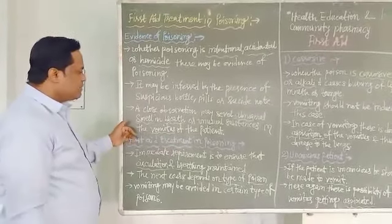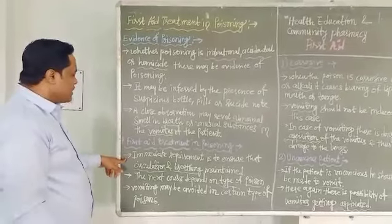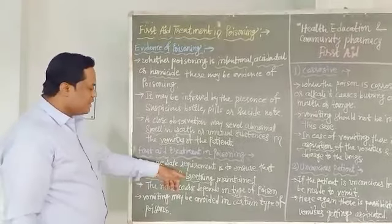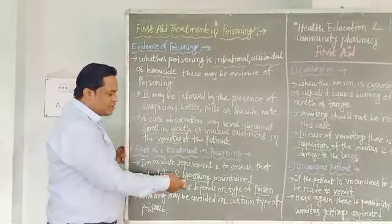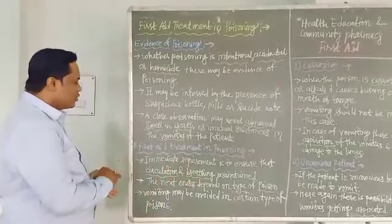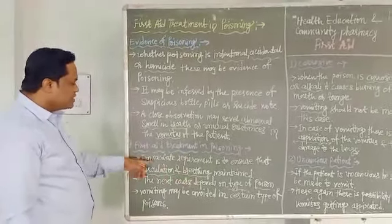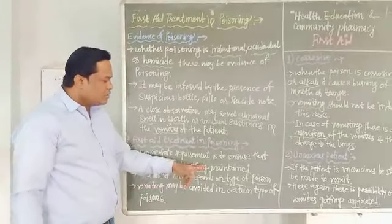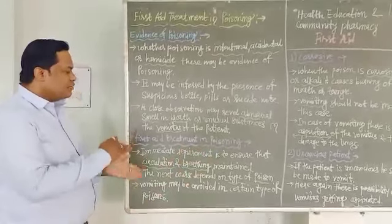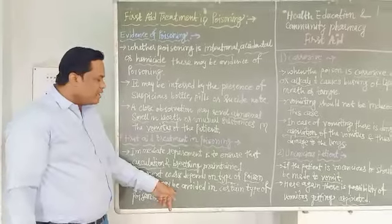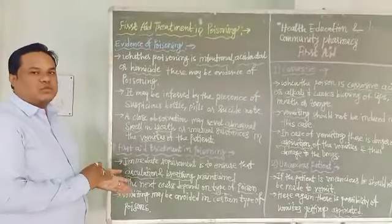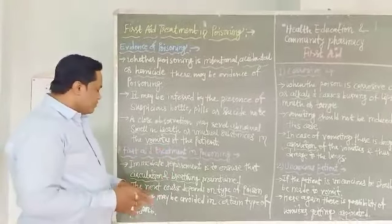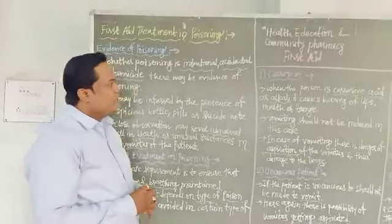The first immediate requirement in poisoning is to ensure that circulation and breathing is maintained. First check the circulation, second is the breathing, and maintain both in this condition. The next course of action depends on the type of poison — identify the poison. Vomiting may be avoided in certain types of poisons because aspiration problems can occur. Aspiration means impairment in the supply of oxygen to the body.